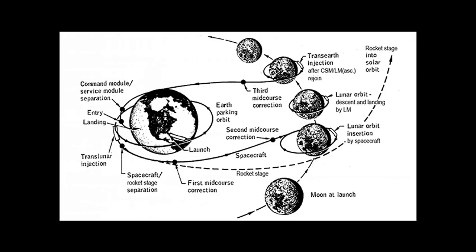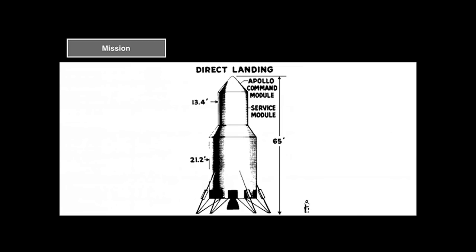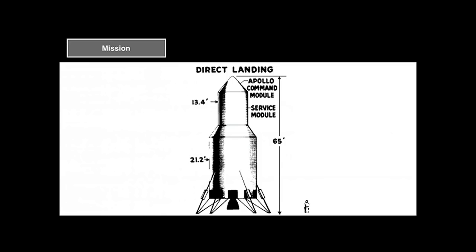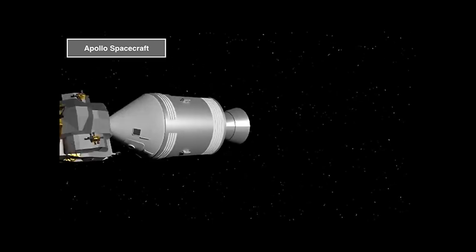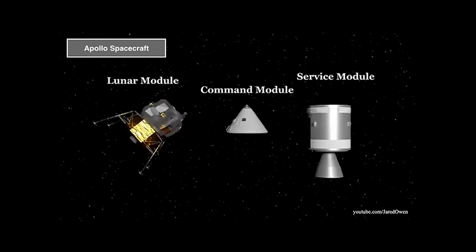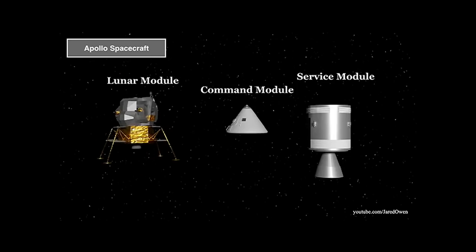To understand the purpose and responsibilities of the Apollo guidance computer, we need to first look at the Apollo mission. The core strategy was, instead of landing the complete spacecraft on the moon — for which an extremely large rocket would have been required — to only land a much smaller lander, while the larger part stays in moon orbit. So the Apollo spacecraft can be separated into the lunar module, the command module, and the service module.